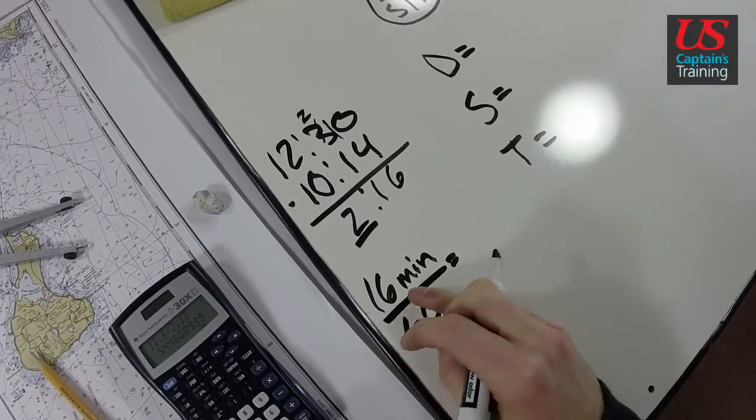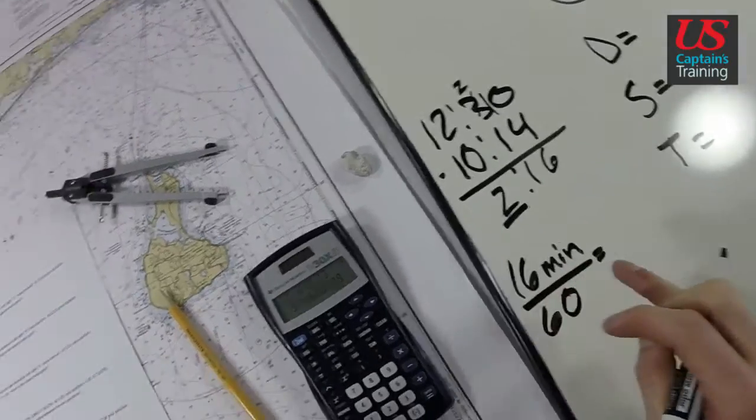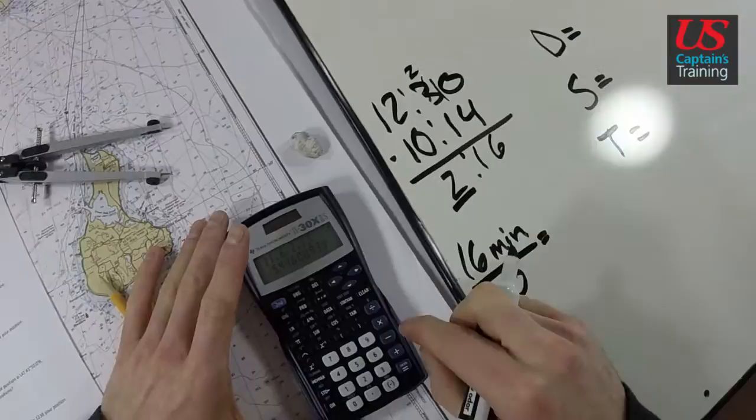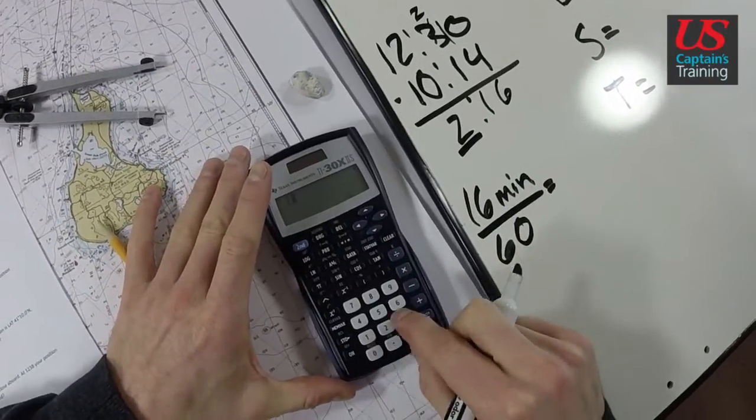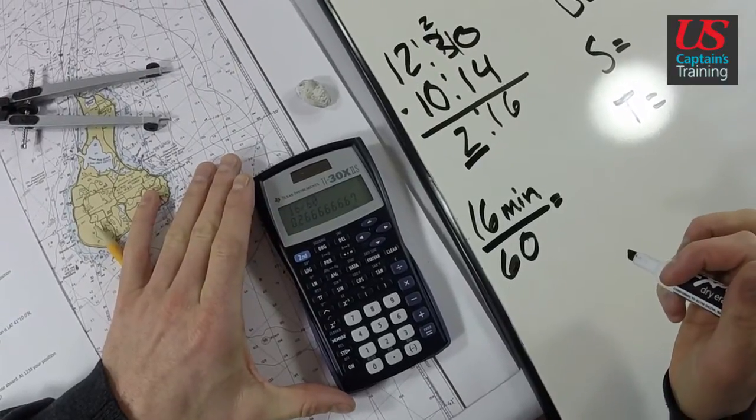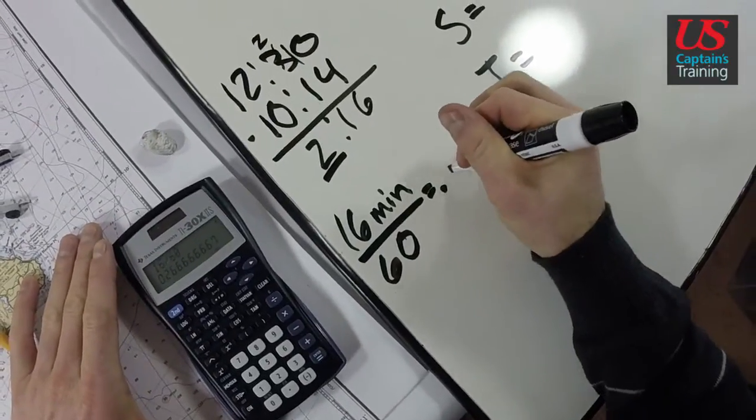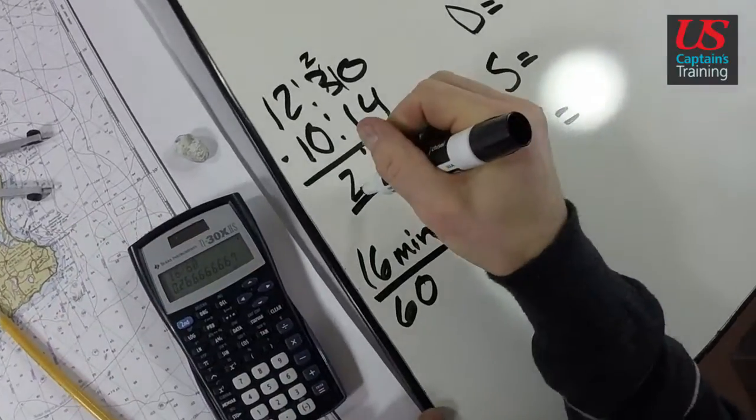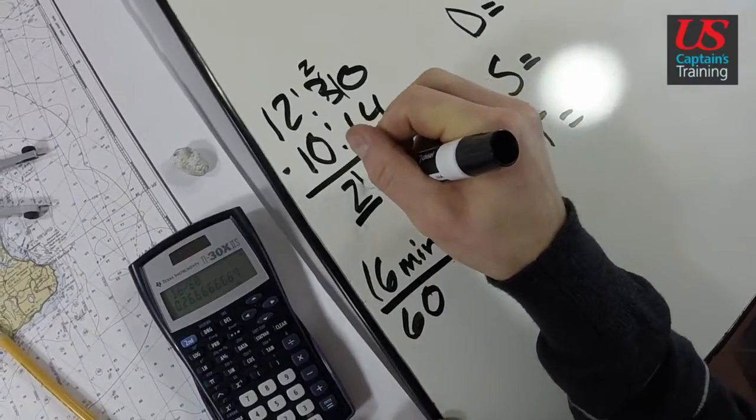So we go 16 divided by 60. 16 divided by 60 equals 0.27. Good, 0.27 hours, so we have 2.27 hours. Our time is 2.27 hours.